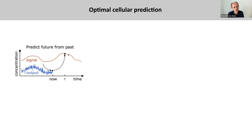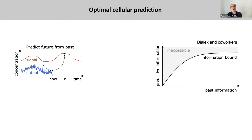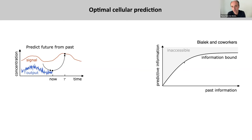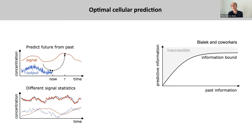The system then needs to predict from the current output what the future input will be. While the system needs to predict the future input, it can only sense the current input and remember the past input. This immediately implies that there is a fundamental limit to how much information the system can obtain about the future — the so-called predictive information — which is set by the amount of information extracted from the past signal.